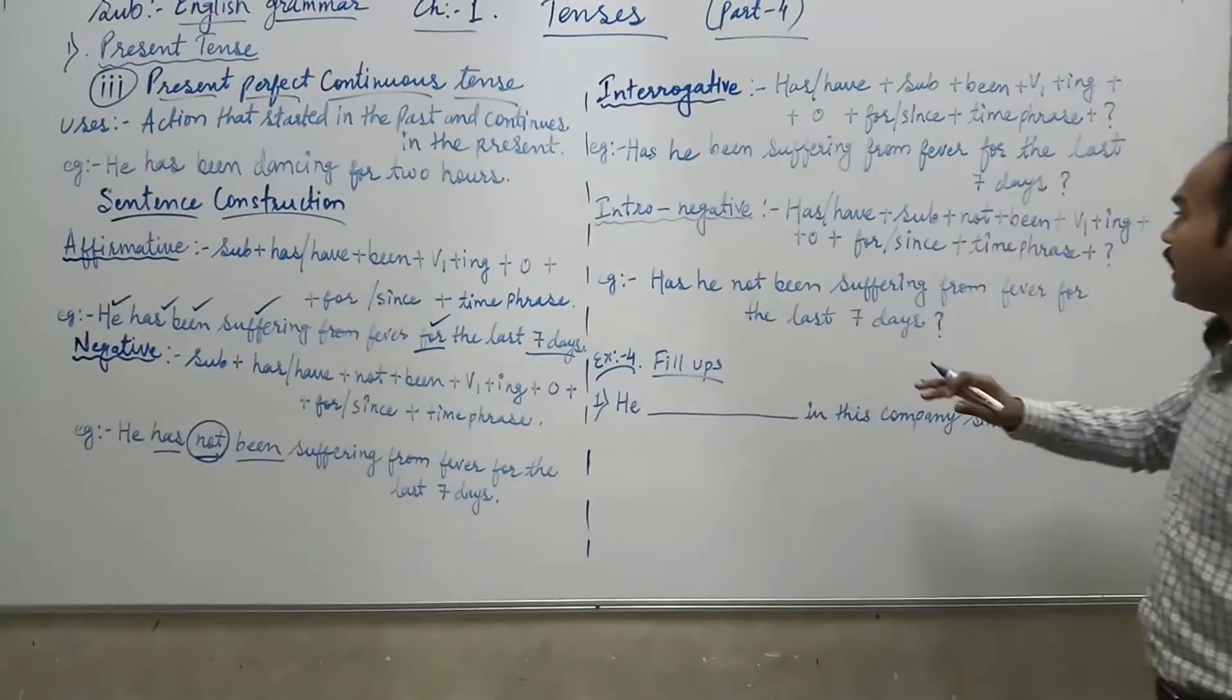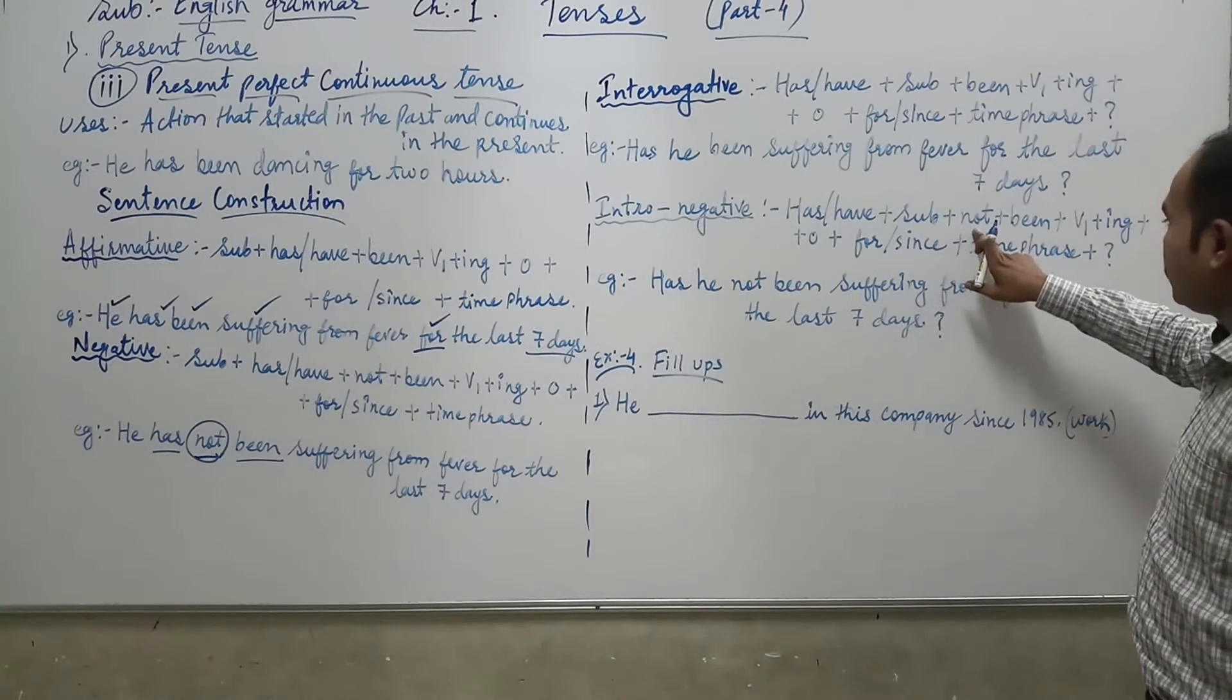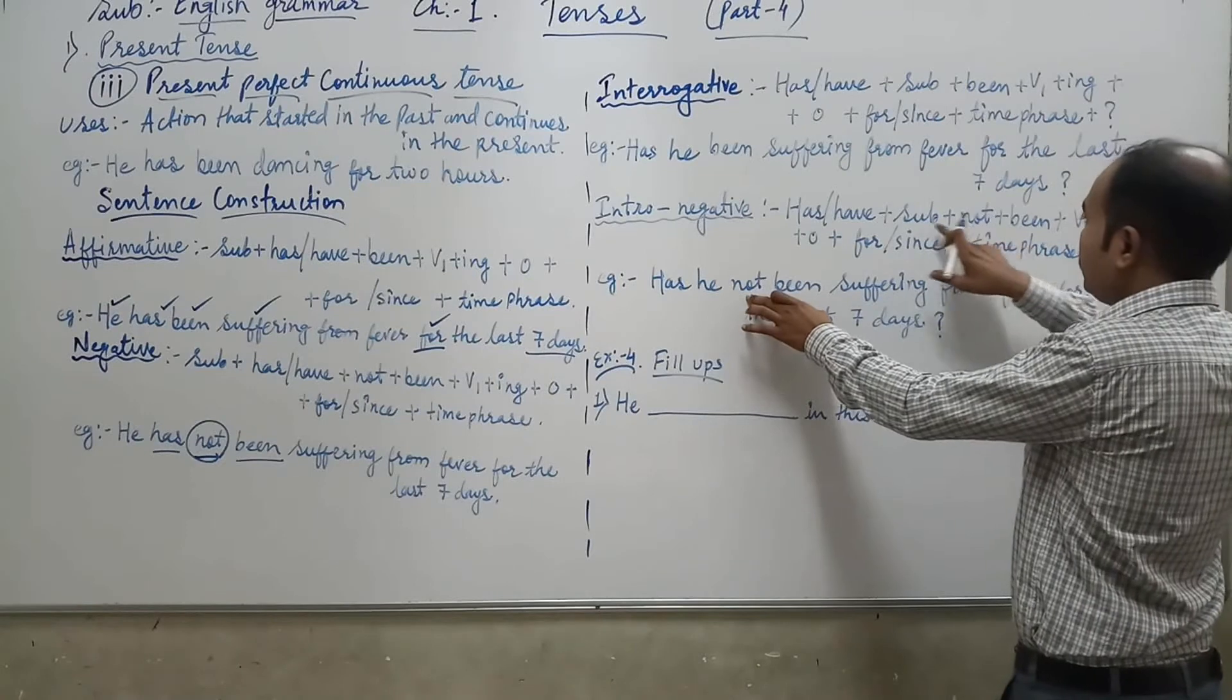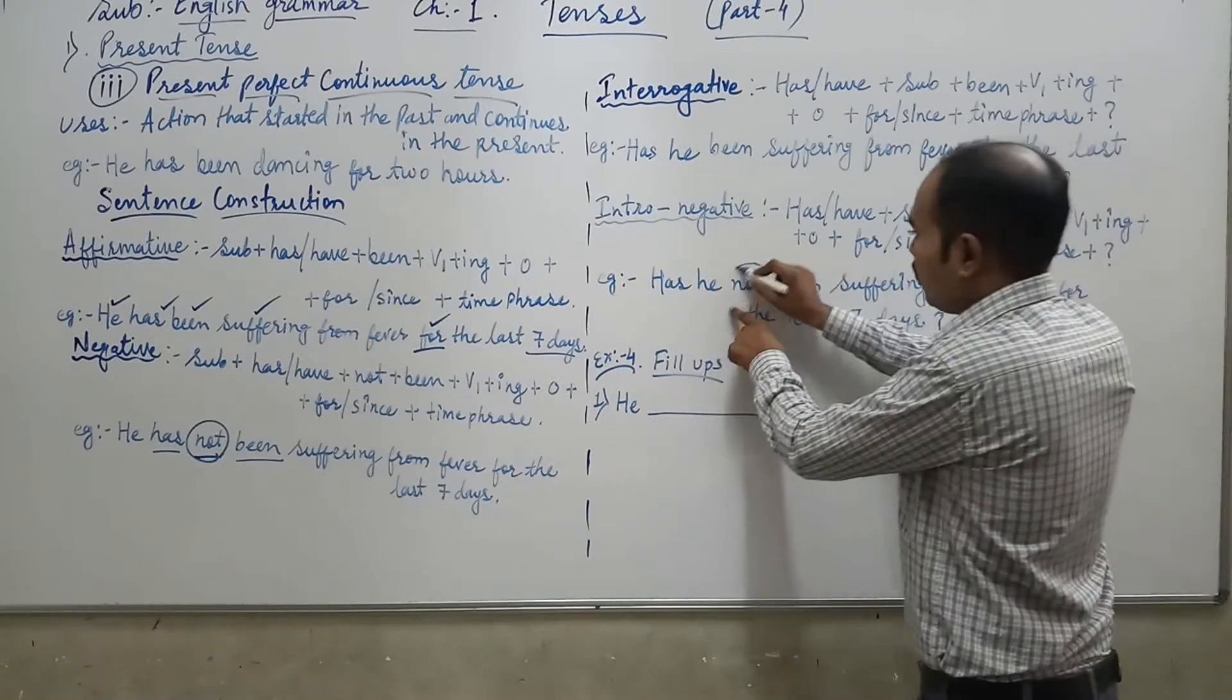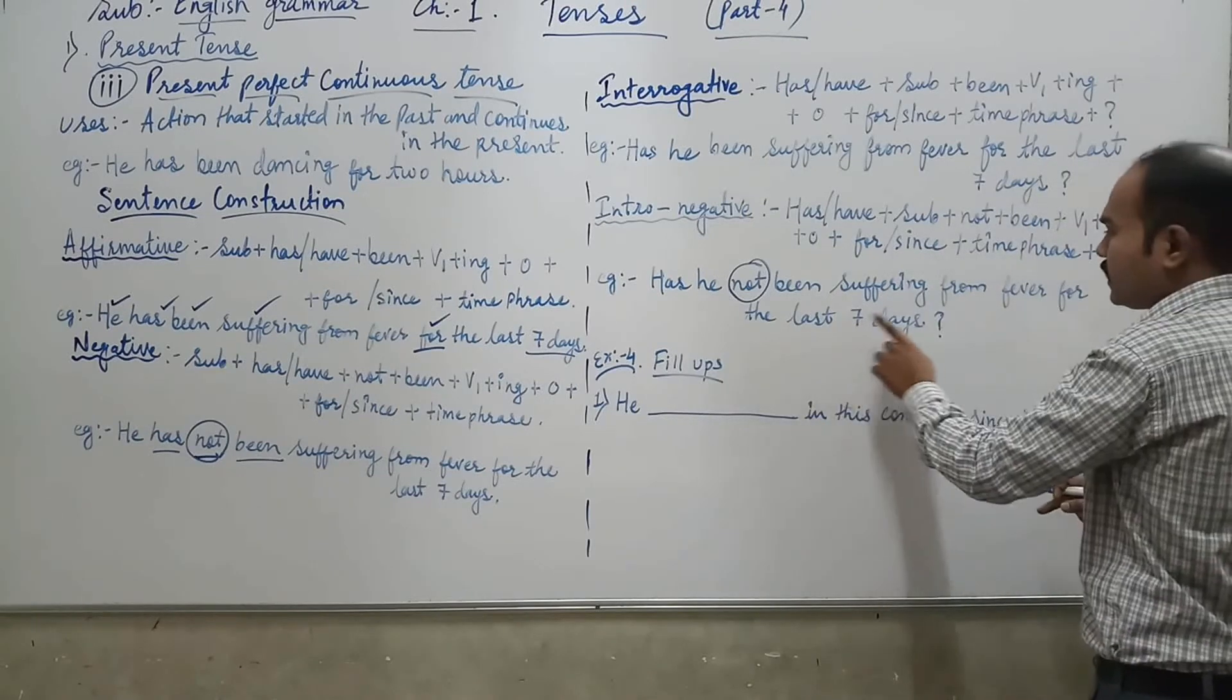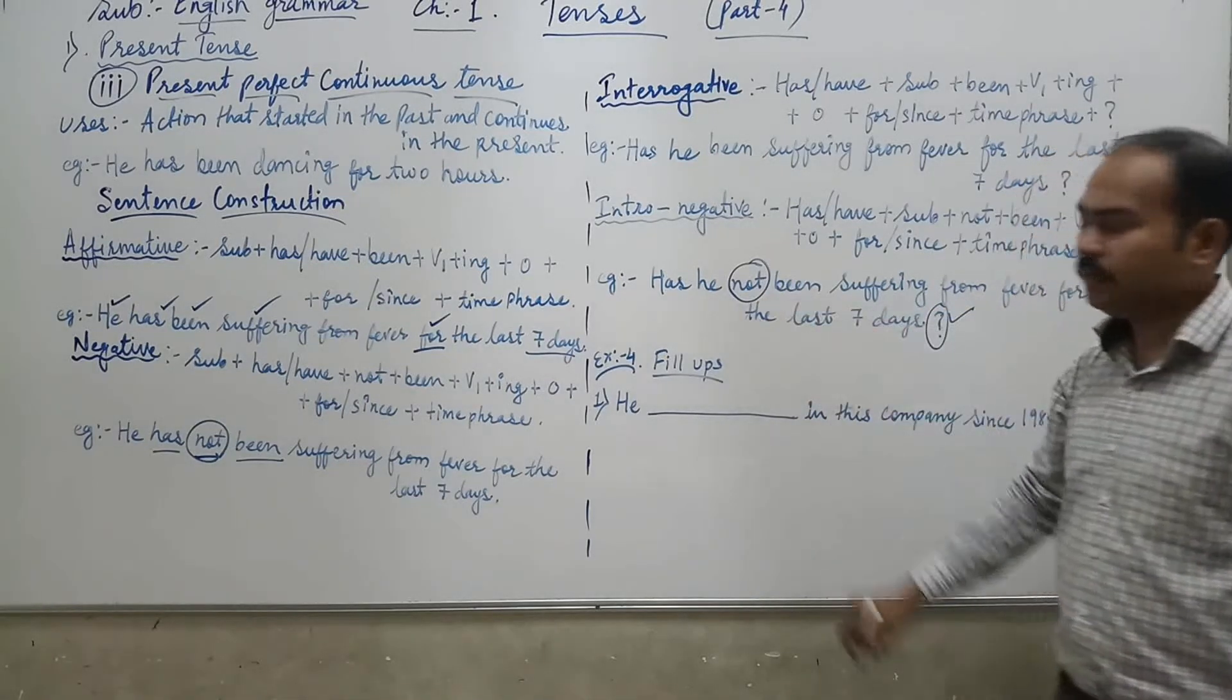Now how to make interrogative negative. Between subject and been, not lagana hai. Has he not been suffering from fever for the last seven days. This is finally with the question mark, it becomes interrogative negative sentence.